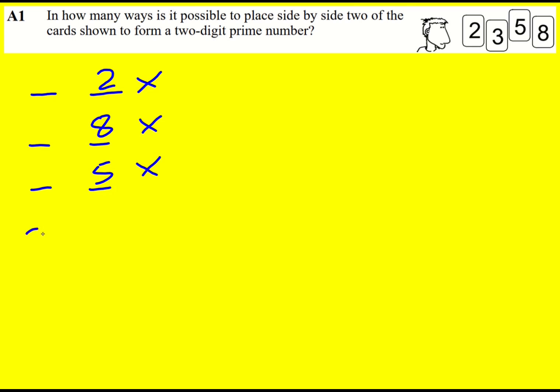So in fact the only primes we need to test are 23, 53 and 83. It turns out that all of these are prime, so there are three ways.